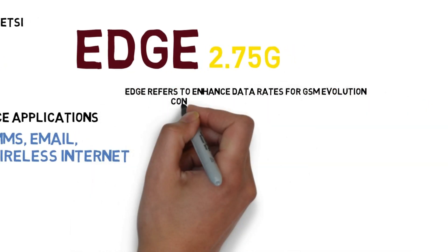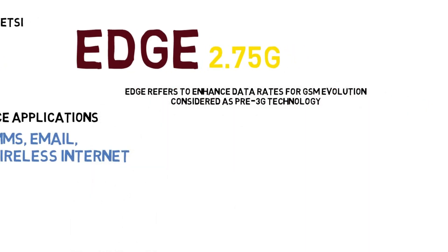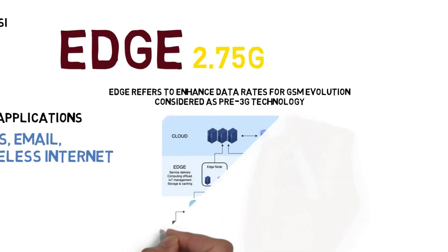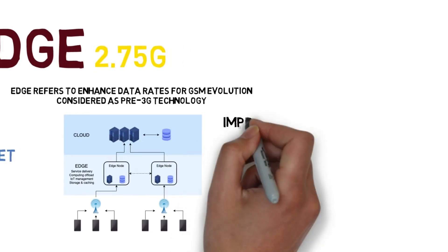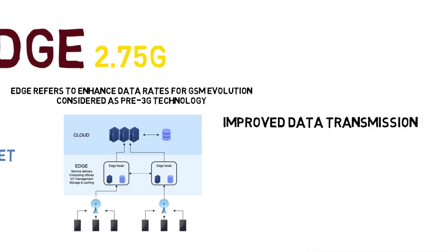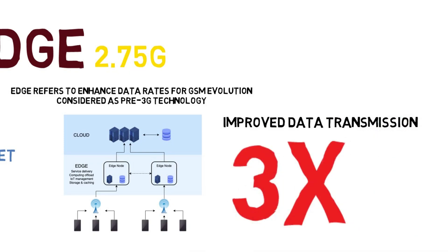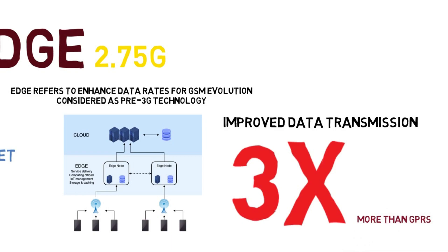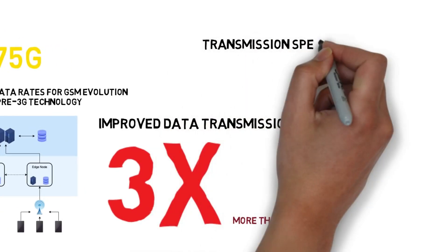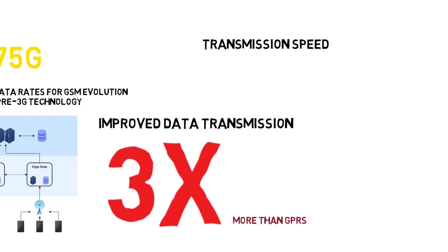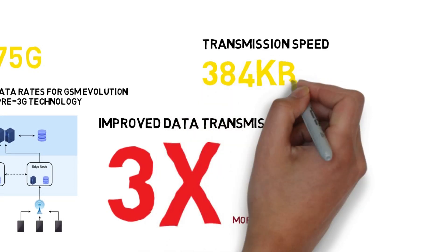EDGE, considered 2.75G, refers to enhanced data rates from GSM evolution and is considered a pre-3G technology. It features improved data transmission, three times better than GPRS, with a transmission speed of 384 KB per second.